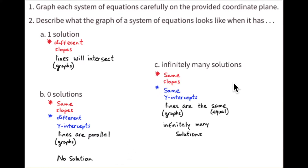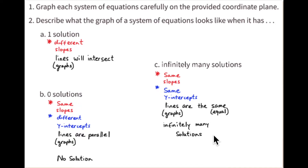And finally, when there are infinitely many solutions, that means the graphs have the same slopes and the same y-intercepts. They are the same lines or the same graphs, so there are infinitely many solutions.